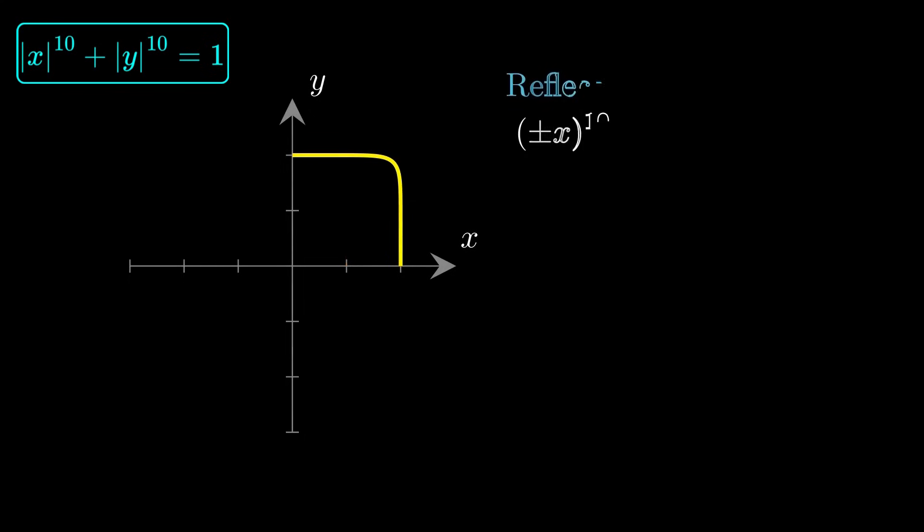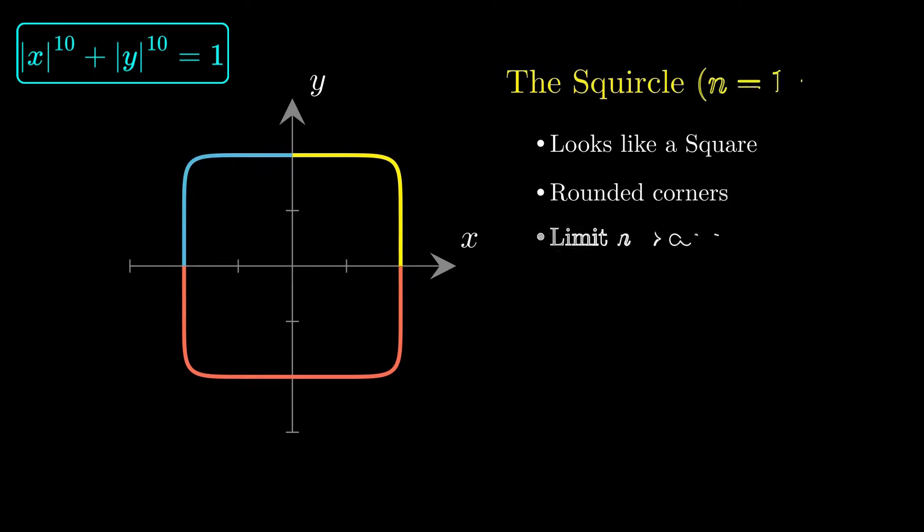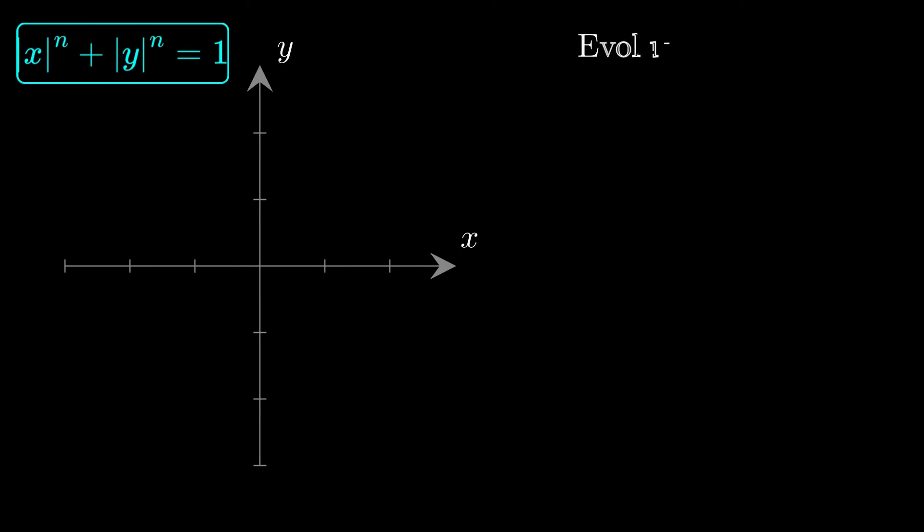Reflecting across both axes doesn't change anything because raising positive or negative x or y to the 10th power gives the same result. The full curve looks almost like a square but with gently rounded corners.